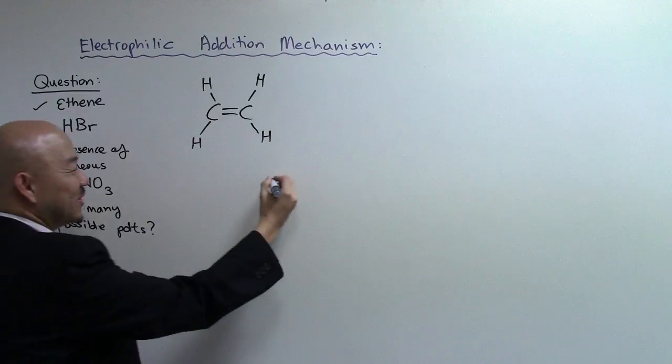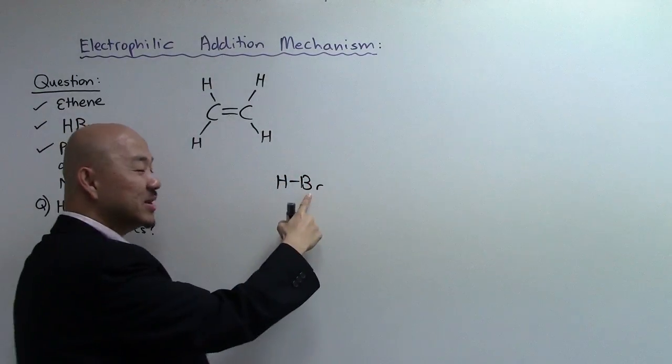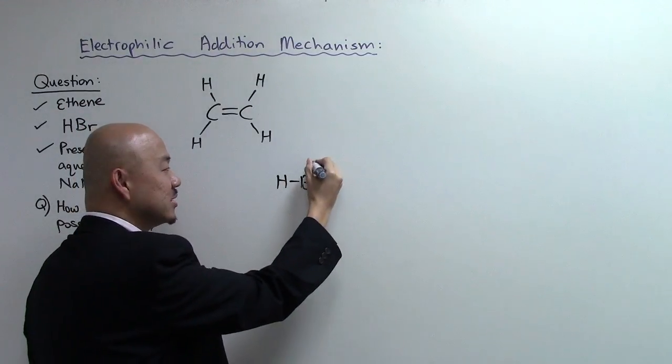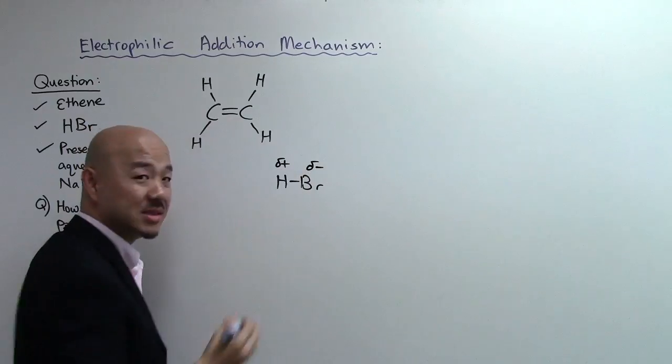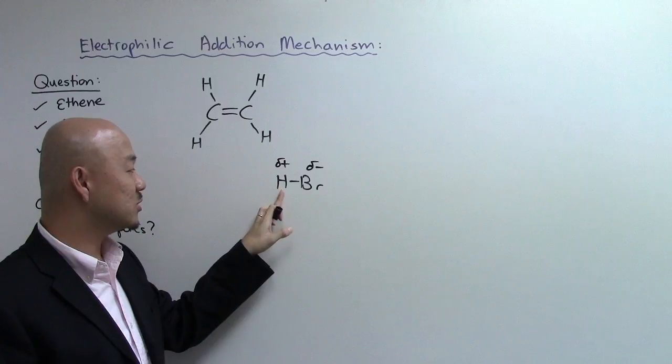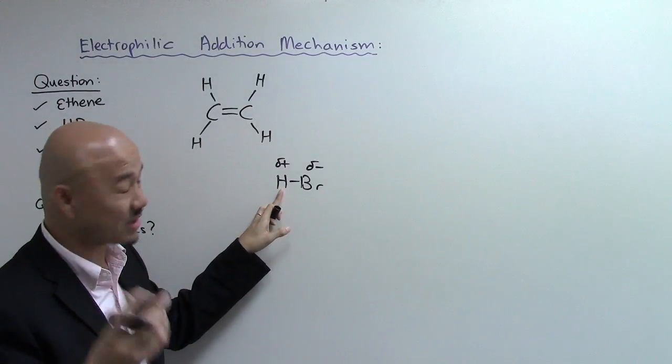This is ethene. We all know that HBr will approach it. Bromine is more electronegative than hydrogen, so this bond will polarize. It will be delta minus, this is delta plus. This hydrogen is slightly electron deficient, so it's kind of becoming an electrophile.